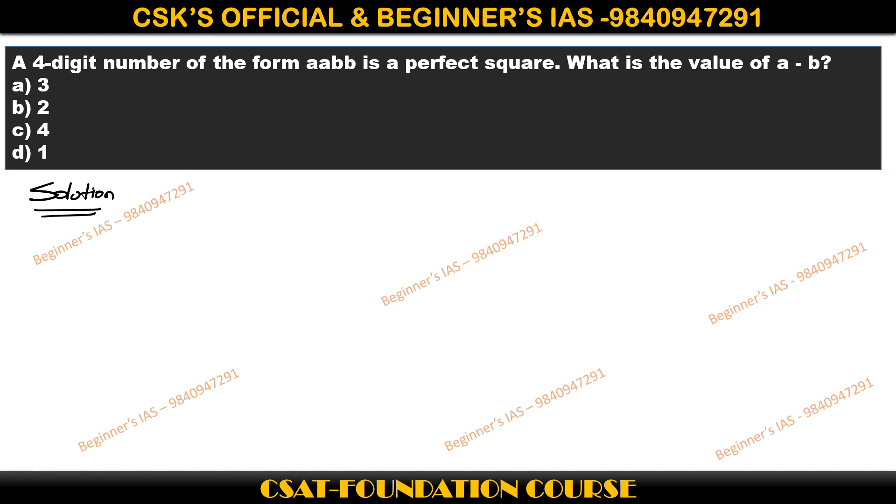A four-digit number of the form aabb is a perfect square, which means that this aabb is your perfect square number. So then what is the value of a minus b? That was the question.